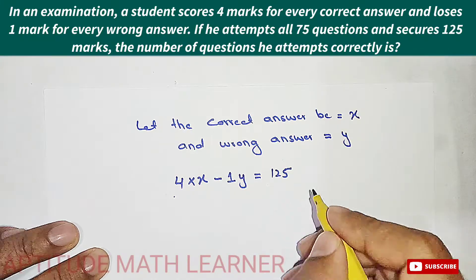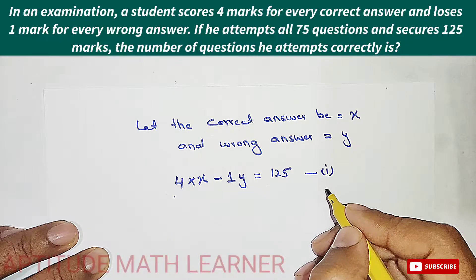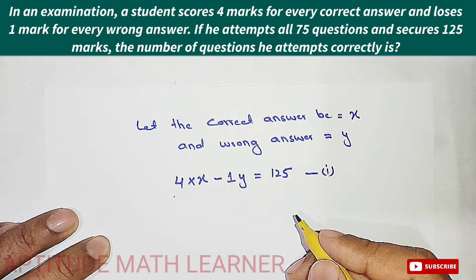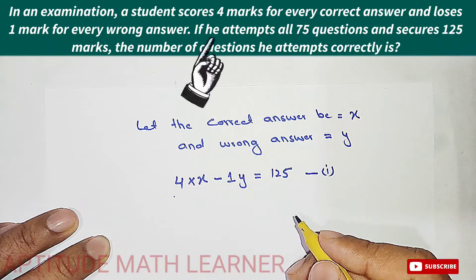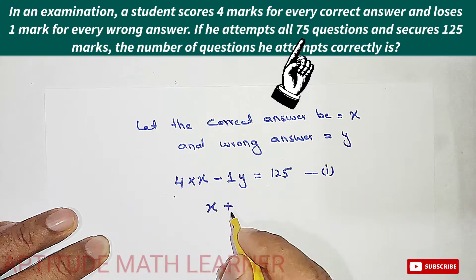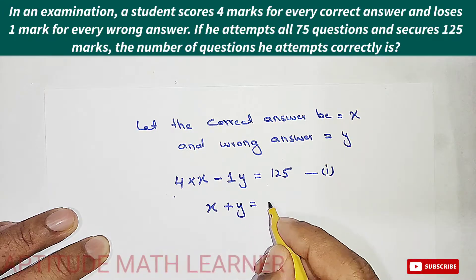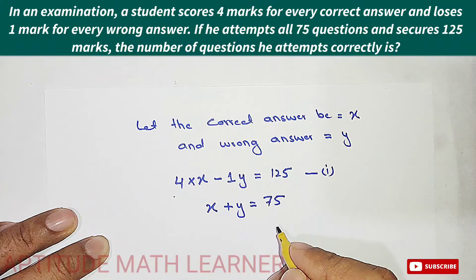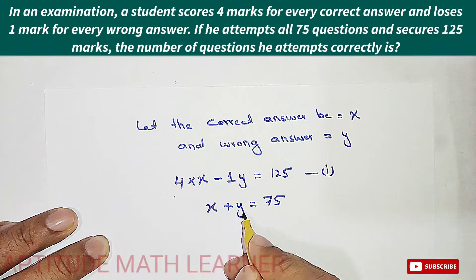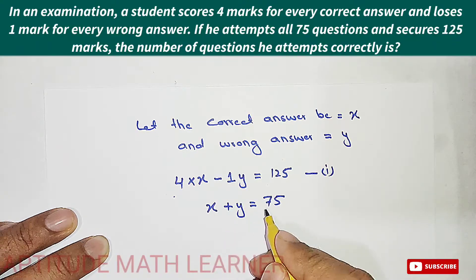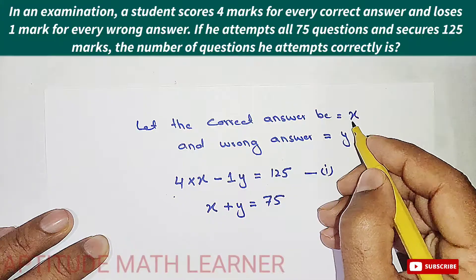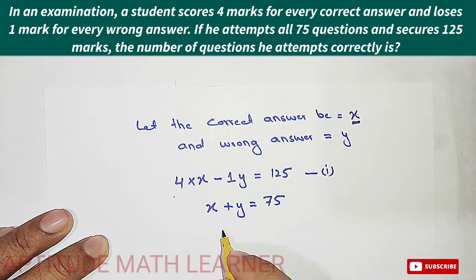There are 75 total questions. So we take the correct answers plus the wrong answers and the total becomes 75. So X plus Y equals 75. This is equation two.